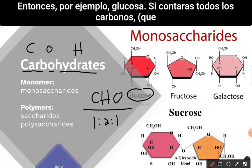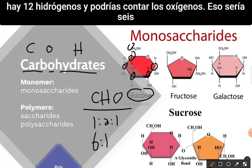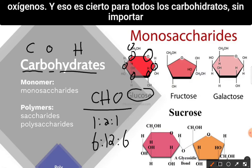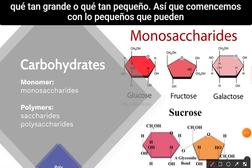For example, glucose: if you count all the carbons — one, two, three, four, five, six — there are six carbons. There are 12 hydrogens and six oxygens. That ratio is true for all carbohydrates, no matter how big or small. So let's start with how small they can be.